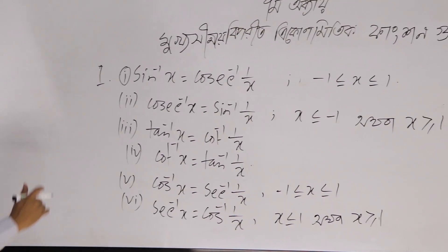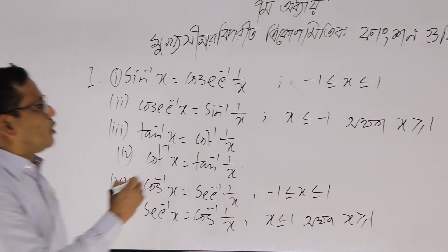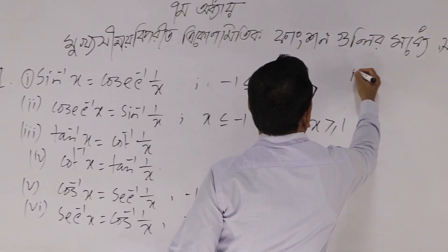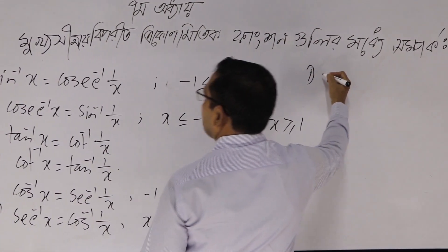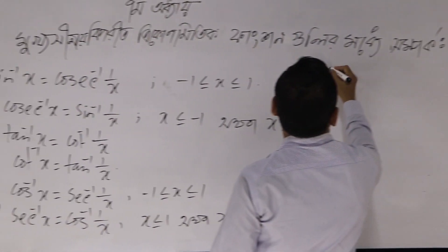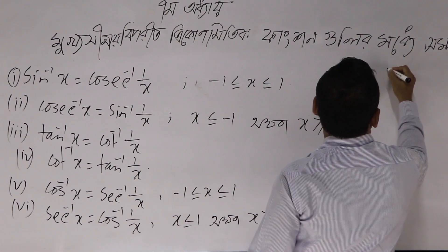We will now prove all these formulas one by one. We will take each formula and prove it. Let us prove them one at a time — proof number one, first formula proof.